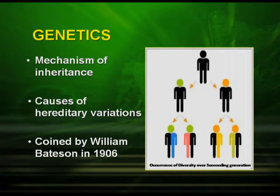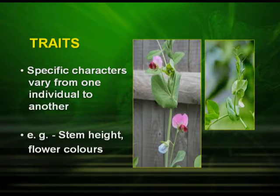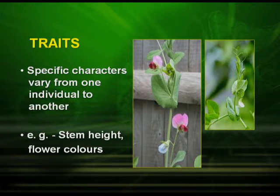What is genetics? It is the study of the mechanism of inheritance and the causes of hereditary variations. The term was coined by William Bateson in 1906. We often talk about traits — these are specific characters that vary from one individual to another. For example, a tall plant versus a short plant, or flower colors such as red or white, are traits studied in genetics.